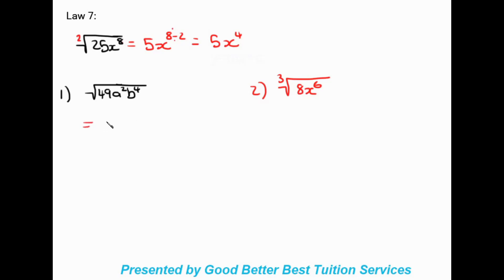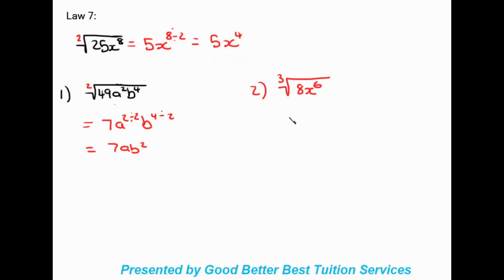For an example with a coefficient: square root of 49 a squared b to the four. Square root of 49 is seven, then a: two divided by two gives one, and b: four divided by two gives two. So the answer is seven a b squared. For a cube root example: cube root of eight x to the six. Eight cube-rooted gives two, and six divided by three gives two. So the answer is two x squared.